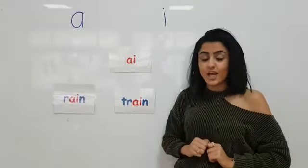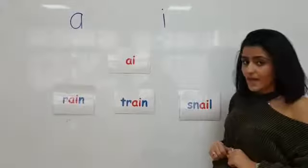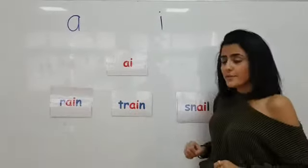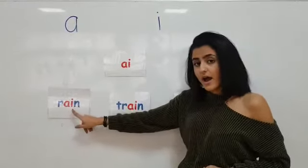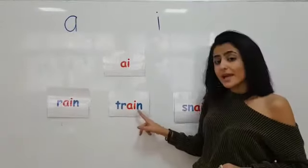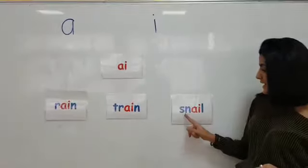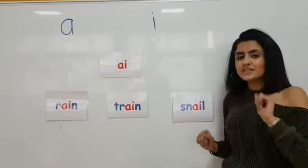Now, let's see a couple of words that make the sound A. Rain. You see, A-I. Train. And snail. As you can see,